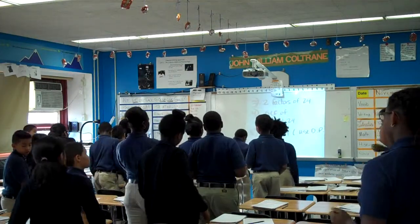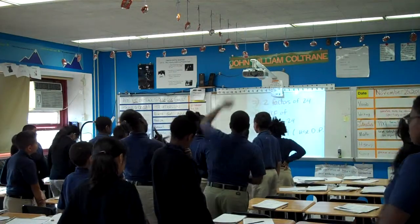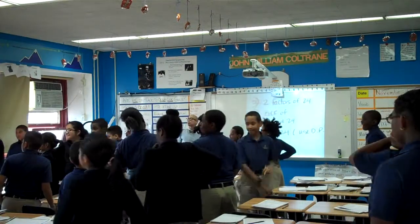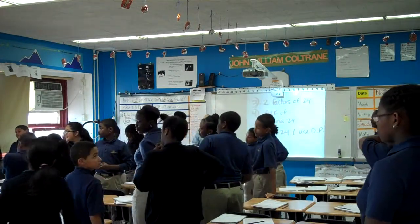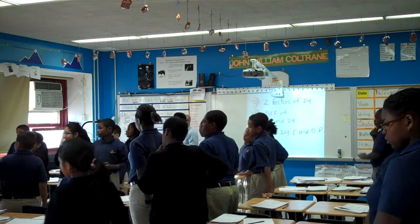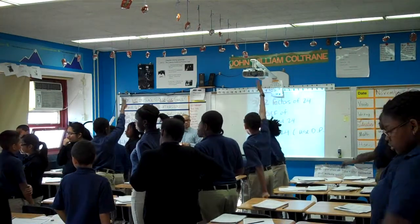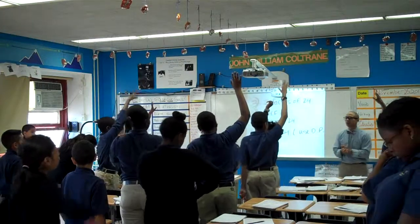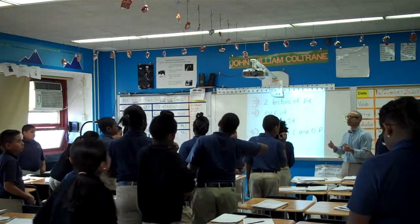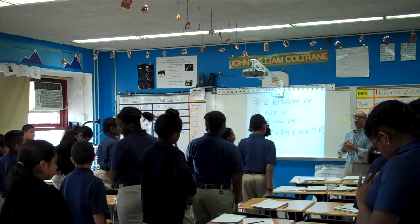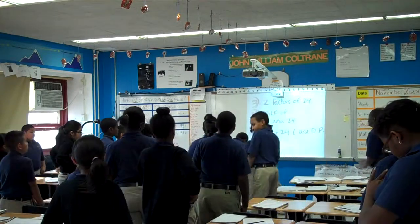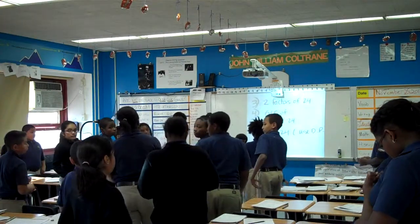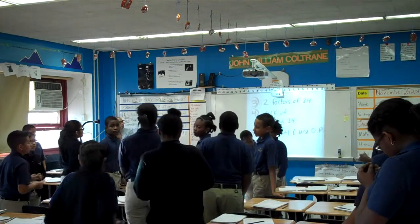Thirteen. The absolute value of 13 — everyone knows — is 13. Why is it 13 and not negative 13? That's the answer. The absolute value of 13: both 13 and negative 13 give us 13 when you find the absolute value. It has nothing to do with going from left to right or right to left. What is absolute value? It's a number's distance away from zero. Absolute value is the distance. Distance is always a positive value. So the absolute value of 13 means: what is the distance of 13 from zero? It's the distance of 13 from zero.